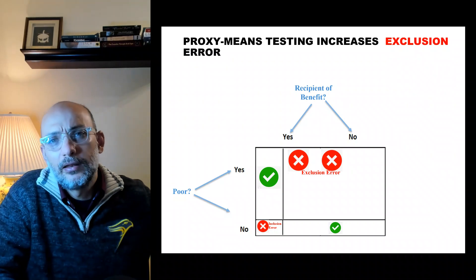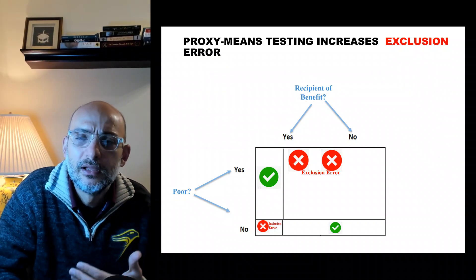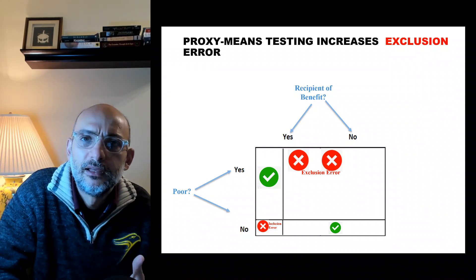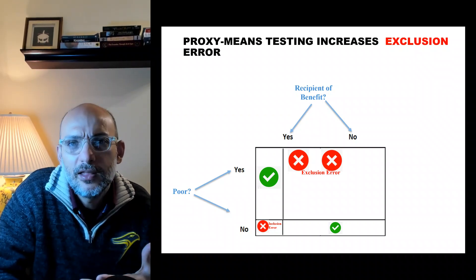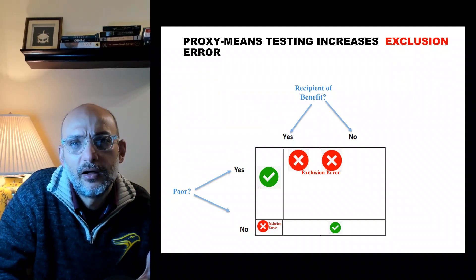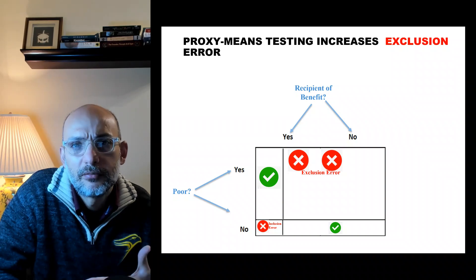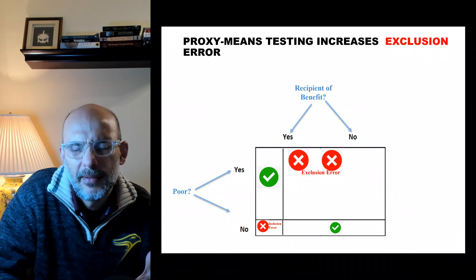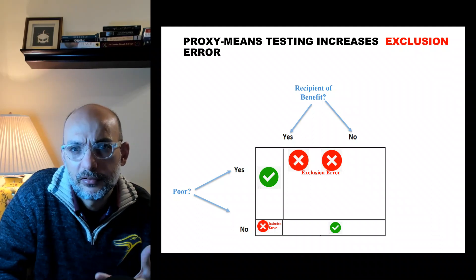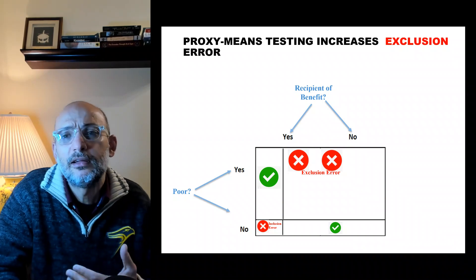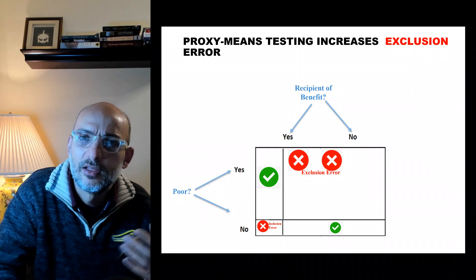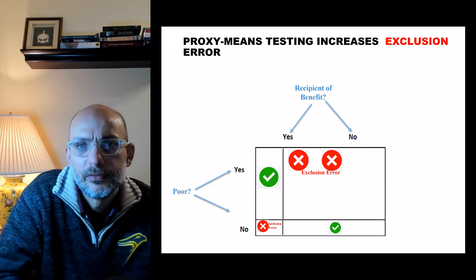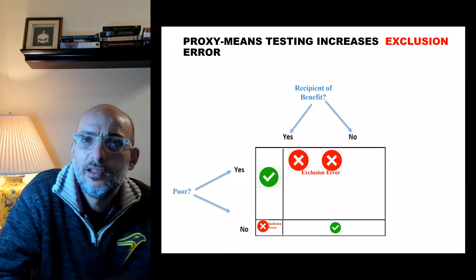In proxy means testing we need to minimize exclusion error, but actually it exaggerates it. Means testing targets the poor based on income, which works in countries with high formality and good data. However, in low-income countries the average informality in the labor market is 84 percent, and in middle-income countries it's about 50 percent. When you don't have enough data, the World Bank-promoted approach is to use proxy means testing with extensive questionnaires — but the price is increased exclusion error.